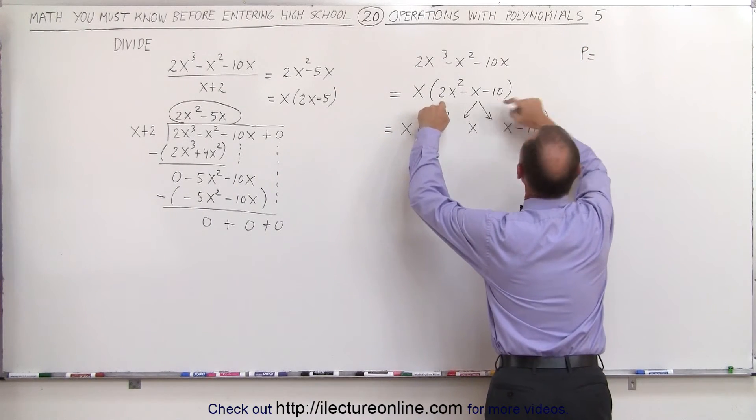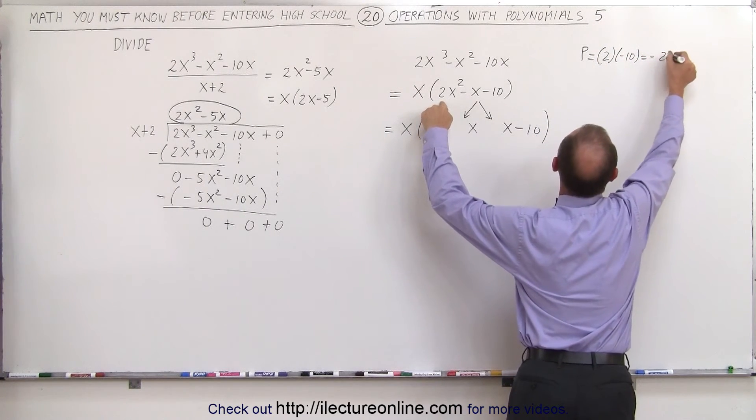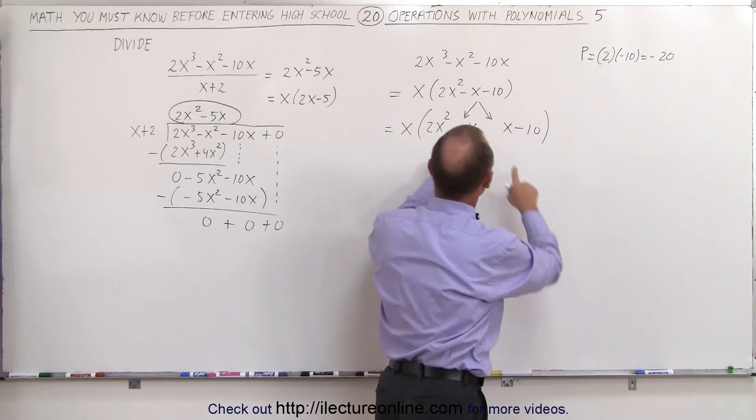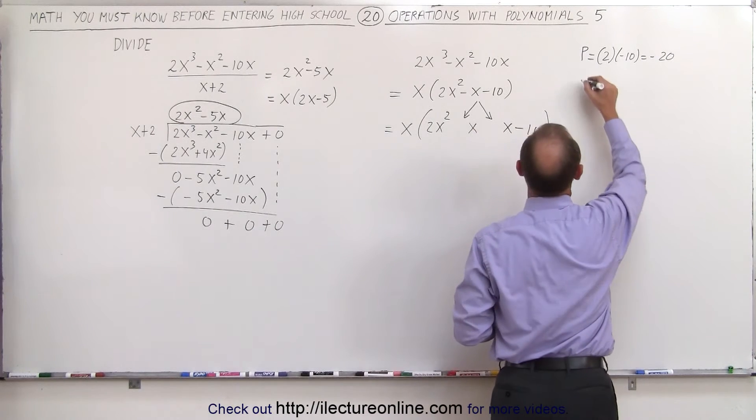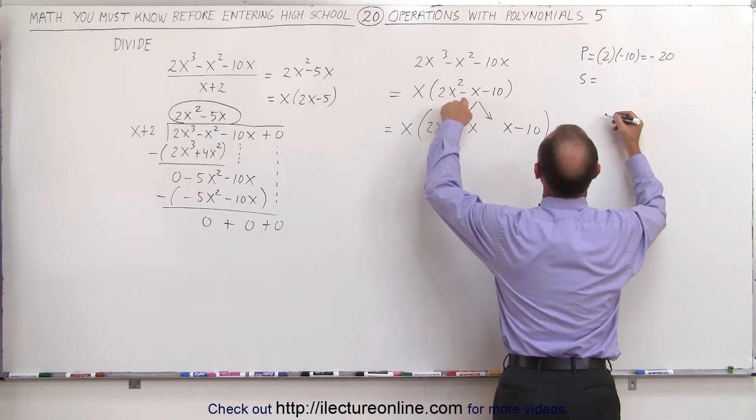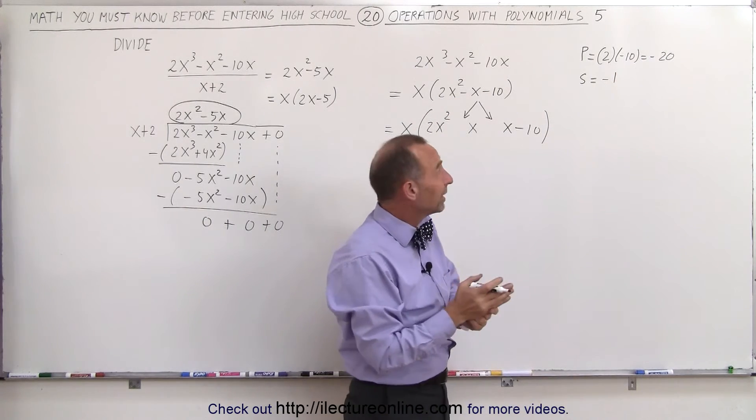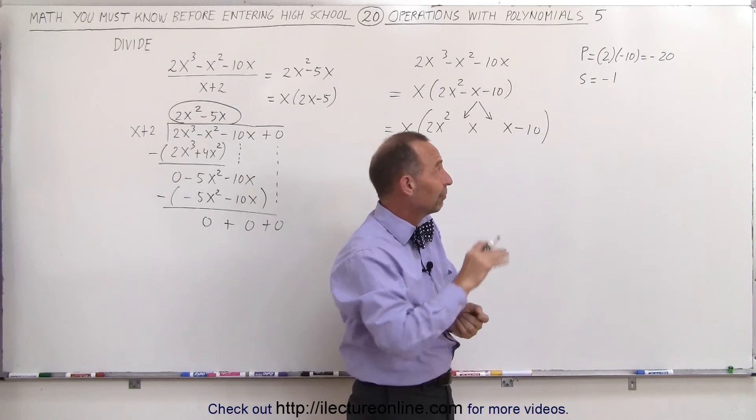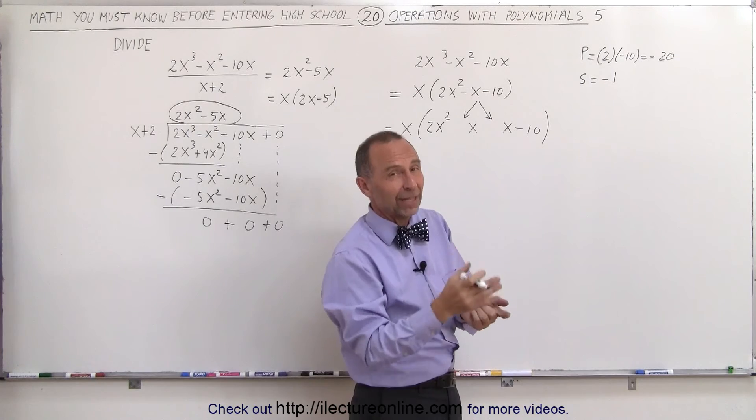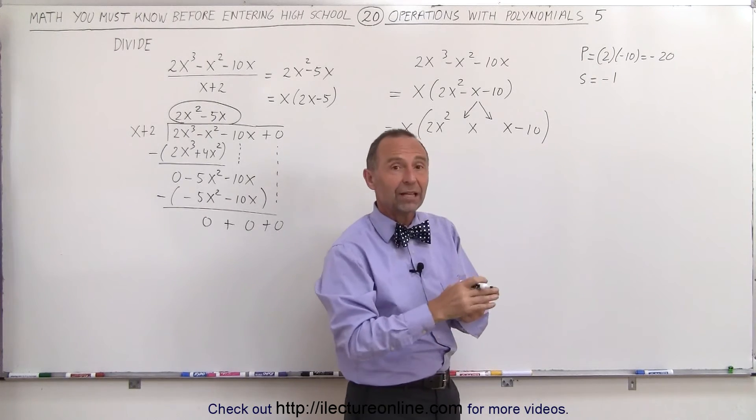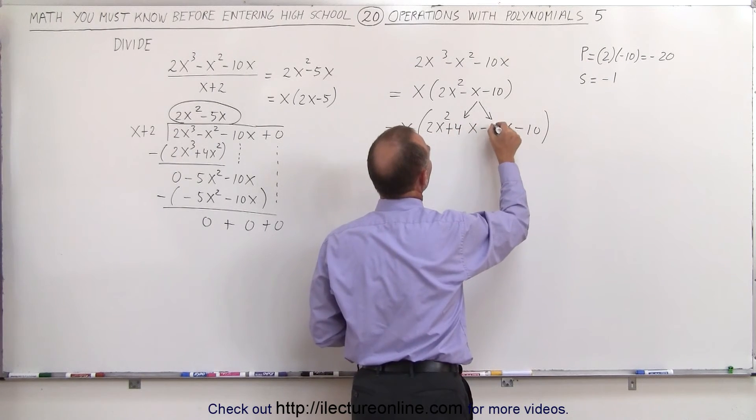We're looking for two coefficients to place in front of the x in such a way that the product of the two is equal to the product of 2 times -10, which is -20. So we're looking for two numbers that when I multiply them together I get -20 and the sum of the two should add up to -1. The answer is +4 and -5.